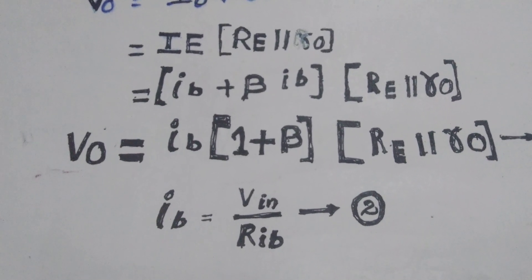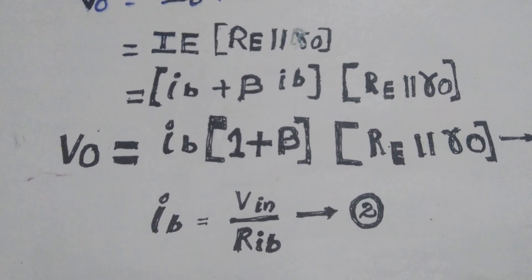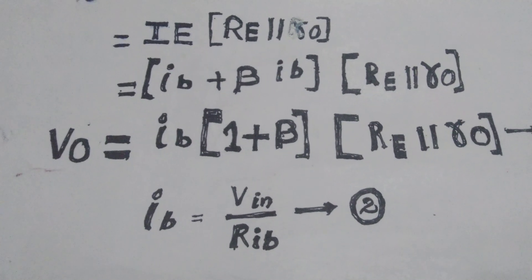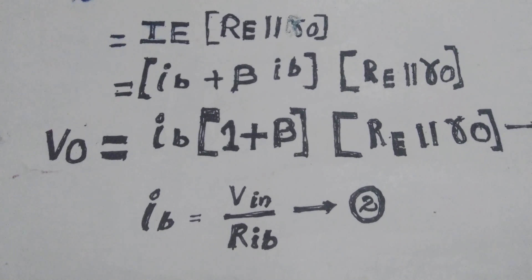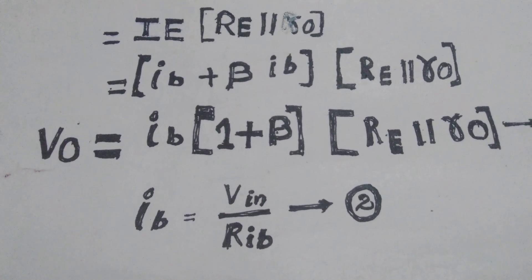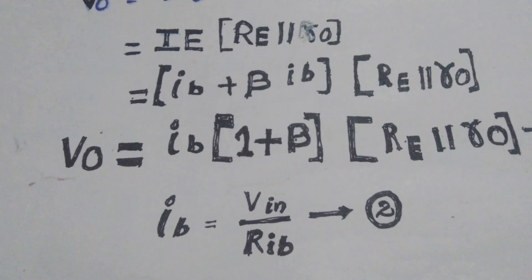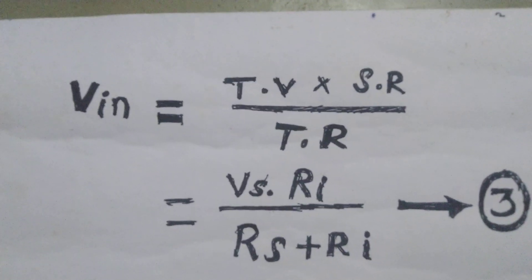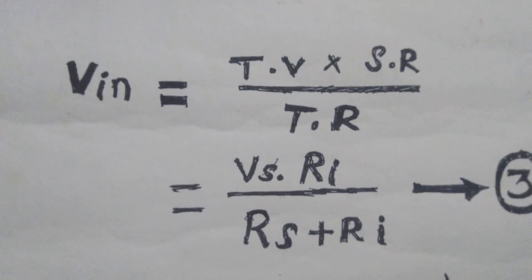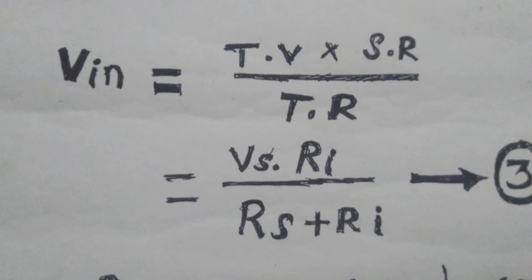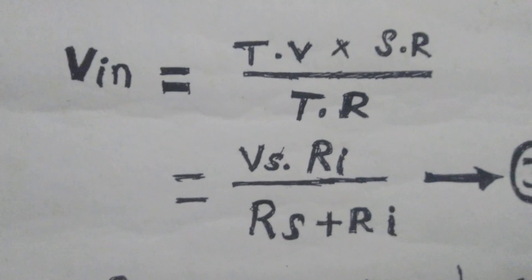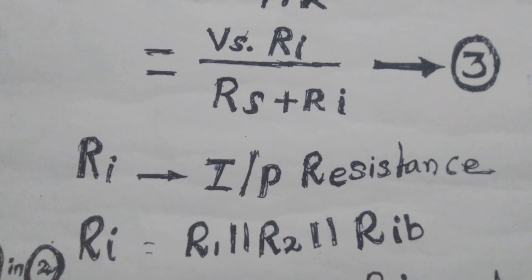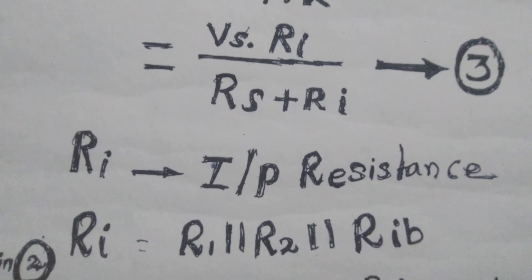IB equals VIN divided by RIB, where VIN is the input voltage and RIB is the input resistance. We find VIN using the voltage divider rule: VIN = VS × RI / (RS + RI), where RI is the parallel combination of R1, R2, and RIB. That is, RI = R1 ∥ R2 ∥ RIB.